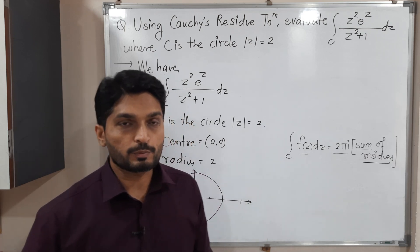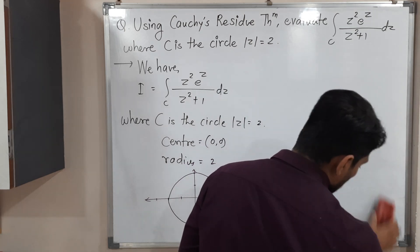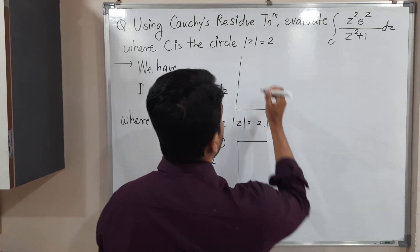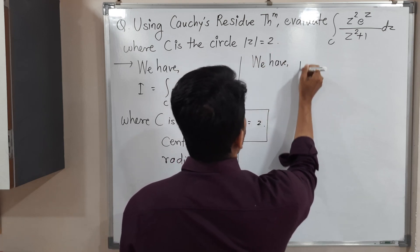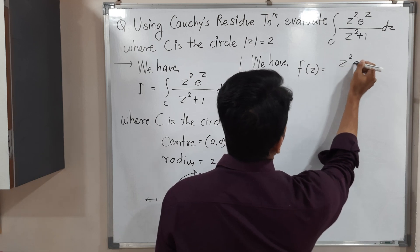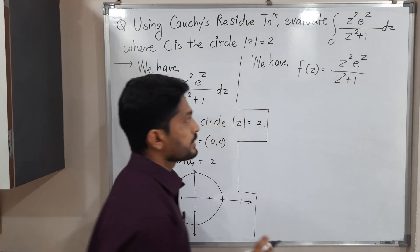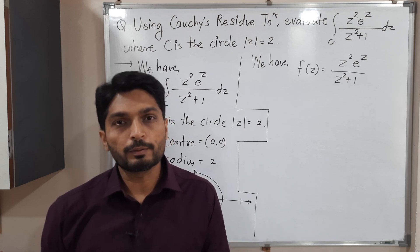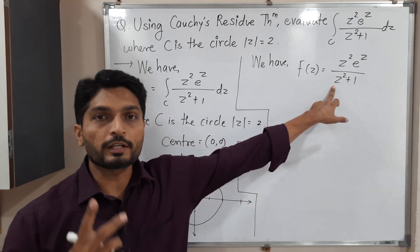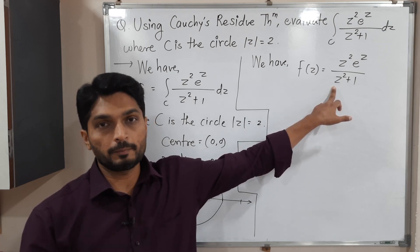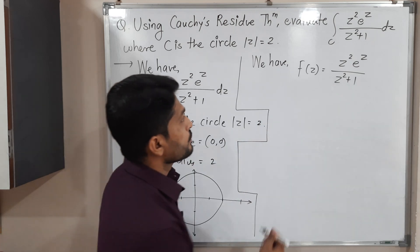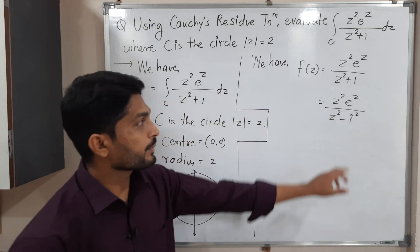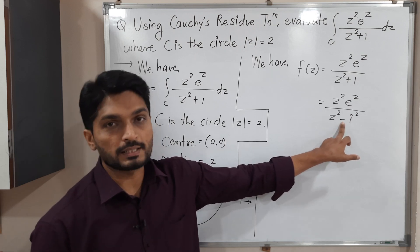So let us write the given function. f(z) = z²eᶻ / (z²+1). We have to find the singular points, i.e., where the denominator is zero. The denominator is a degree-2 polynomial; let us factor it. We write z²+1 = z² − (−1) = z² − i², which factors as (z+i)(z−i).